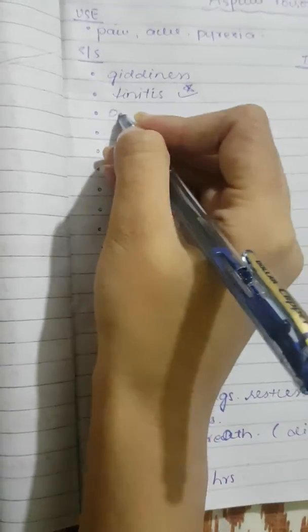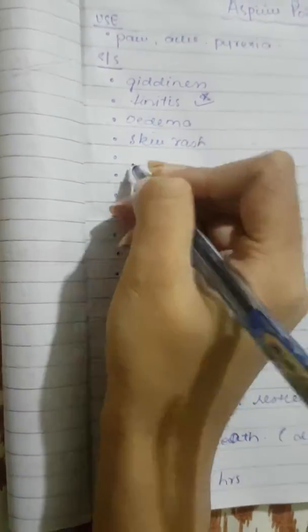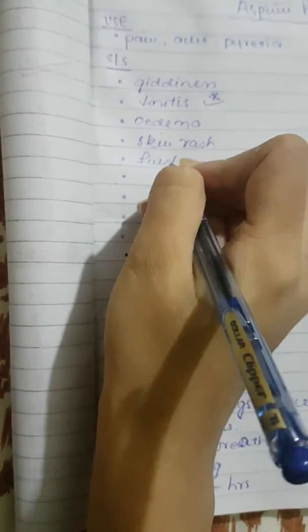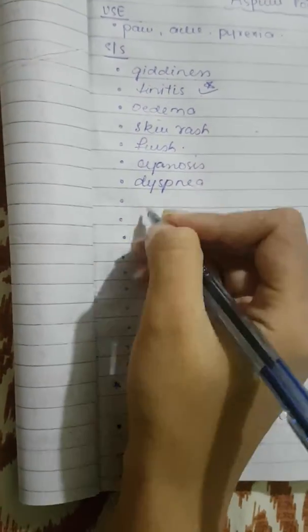Then comes edema, face and eyelid, skin rashes, flushing of skin, cyanosis, dyspnea, pyrexia.